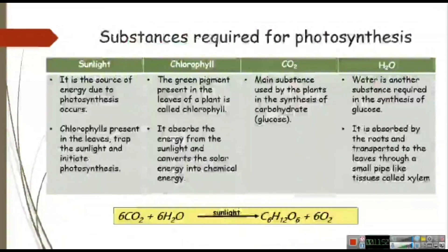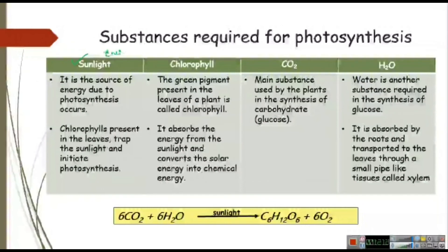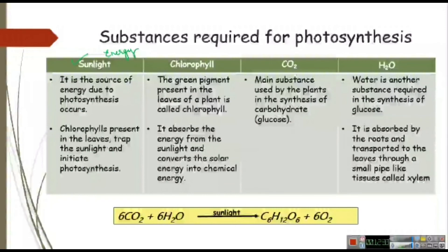There are four things which are very necessary for photosynthesis. First is sunlight, which is the source of energy. Without sunlight, there will be no energy and the plants will not be able to make their food. Just like your mother puts a cooker on the gas stove and the food doesn't cook by itself — she has to turn the gas on and the heat provides the energy to cook. Similarly, plants also need energy, and that energy is provided by sunlight.